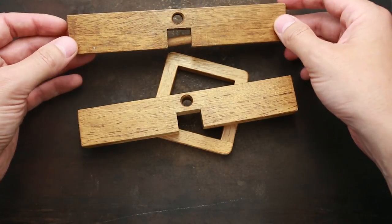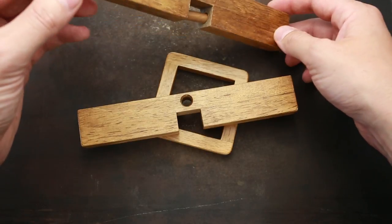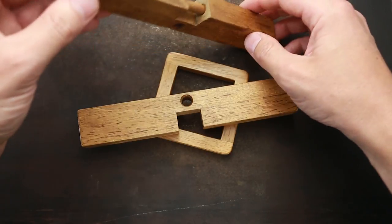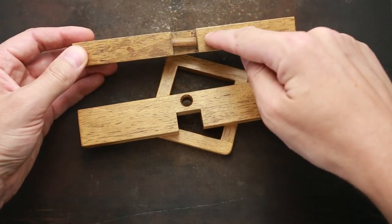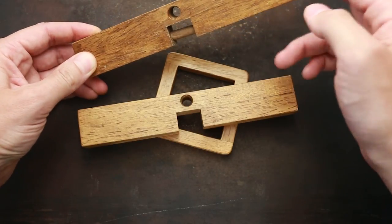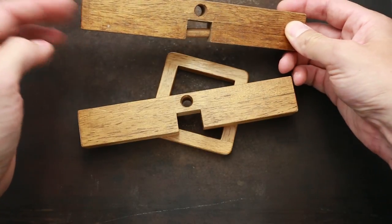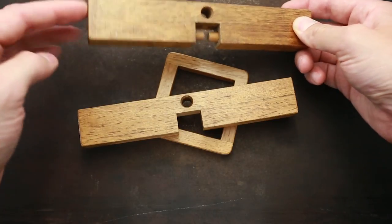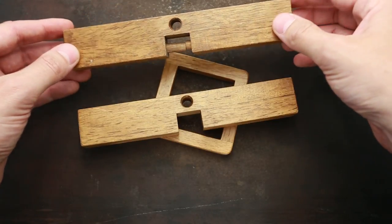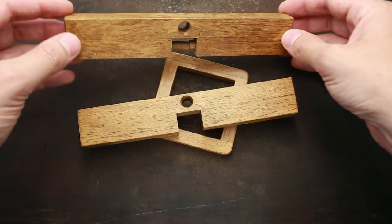So when you tilt this puzzle on one side, the one pin goes inside, but the other comes out and it's blocking the puzzle. So it's impossible to solve it just by tilting it on the right or on the left.